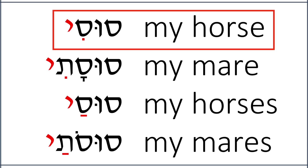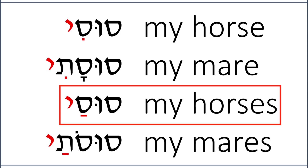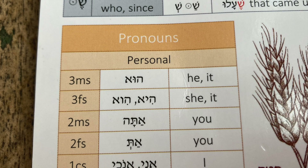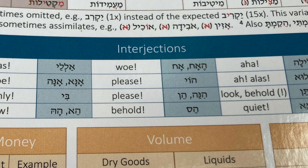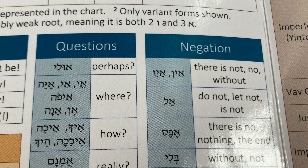You will also be able to tell the difference between susi — 'my horse' — and susai — 'my horses.' On this page, there are also charts for pronouns, the different types of adjectives, and other small charts for interjections, questions, and negation.